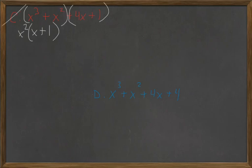Now, on D, we have the same pattern. x squared, x + 1. And then here you have a 4 factored out, x + 1.